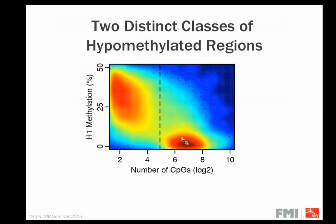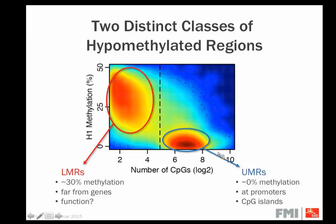If I systematically identify those regions genome-wide and plot the number of CpGs per region versus average methylation, you get two clear populations — one of the few examples in biological data where you truly get bimodal distributions. One population is the well-known CpG islands: completely unmethylated regions with lots of CpGs and really no residual methylation. The other population — the new things we discovered — have on average a bit more methylation and only few CpGs, with the low CpG content found mostly outside CpG islands. They also tend to be far away from genes.